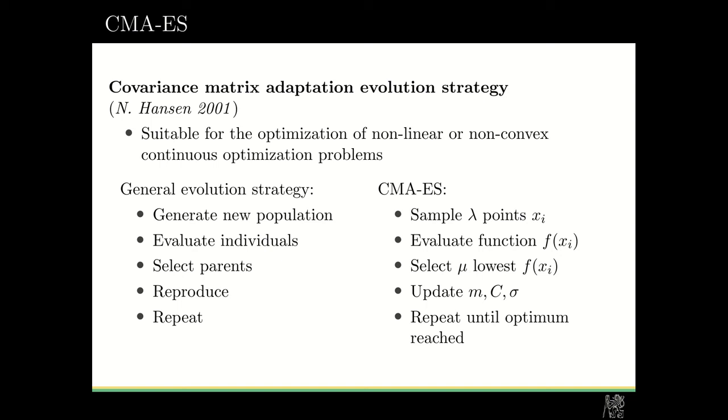So it is an evolution strategy. Evolution strategy in general works in following phases: In the first phase, it generates a new population of candidate solutions. Then it evaluates each individual. Then it selects parents, and by the fitness functions it selects usually the parents with the best fitness function. These parents will reproduce and the cycle repeats.